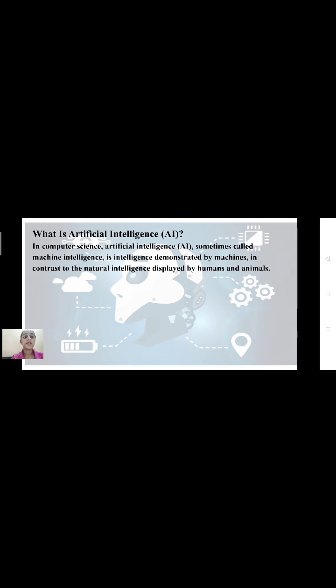First of all, let us know what is artificial intelligence. Artificial intelligence in computer science, sometimes called machine intelligence, is intelligence demonstrated by machines, in contrast to the natural intelligence displayed by humans and animals. The term may also be applied to machines that exhibit traits associated with the human mind, such as learning and problem solving. The ideal characteristic of artificial intelligence is its ability to rationalize and take actions that have the best chance of achieving a specific goal. The term AI was first coined in 1956 by John McCarthy at the Dartmouth conference. He defined AI as the science and engineering of making intelligent machines.